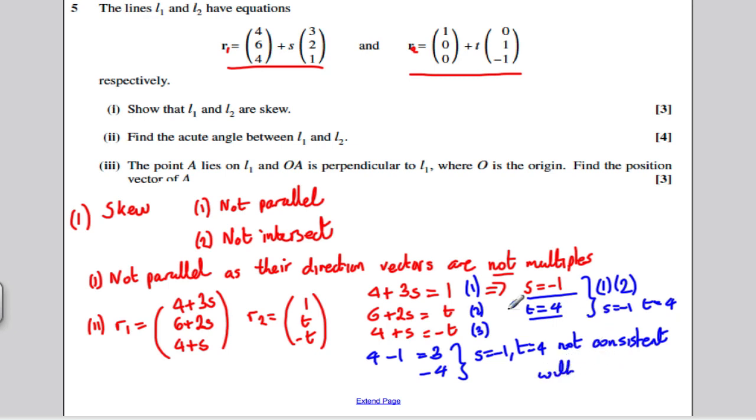Does that work in equation 3? Well, 4 minus 1 is 3 and negative 4 is just negative 4. So S is minus 1 and T is 4, not consistent with equation 3. That tells you that these three equations do not have a solution, S and T, that make them all equal. The lines do not intersect, and therefore they are skew. So R1 and R2 are what's called skew.